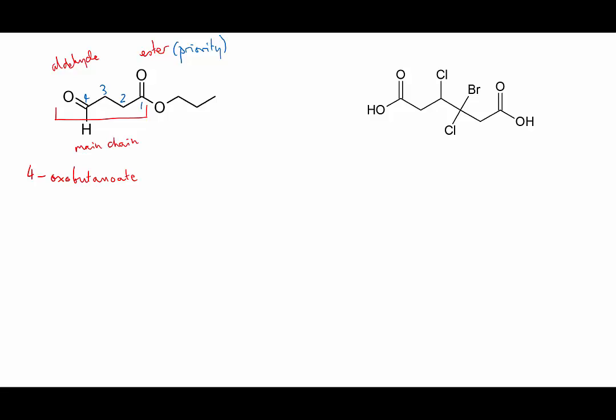Okay, now the other part of the ester, the bit that used to be the alcohol, it has three carbons and we name it like a normal hydrocarbon substituent, so it's called propyl. And the full name is propyl 4-oxo-butanoate.